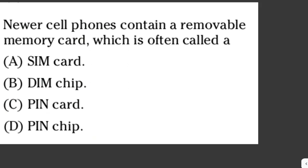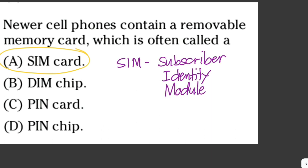Newer cell phones contain a removable memory card, which is often called a - the answer here is letter A, SIM card. SIM stands for subscriber identity module. This card contains information such as your phone number, your billing information, and your address book, and makes it easier to switch from one cell phone to another.